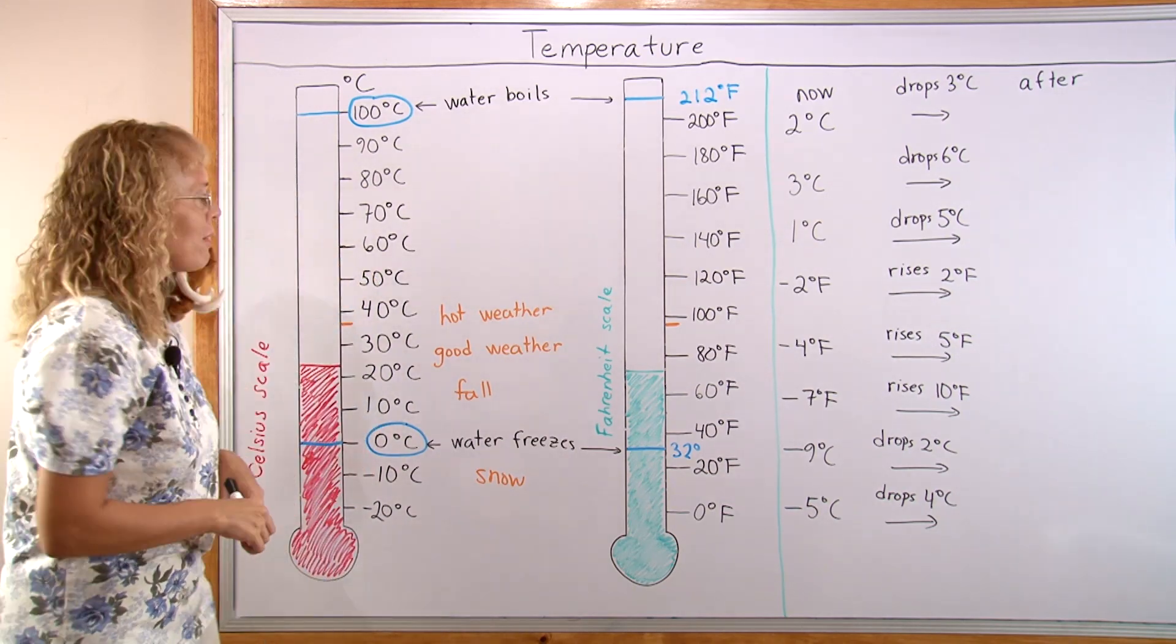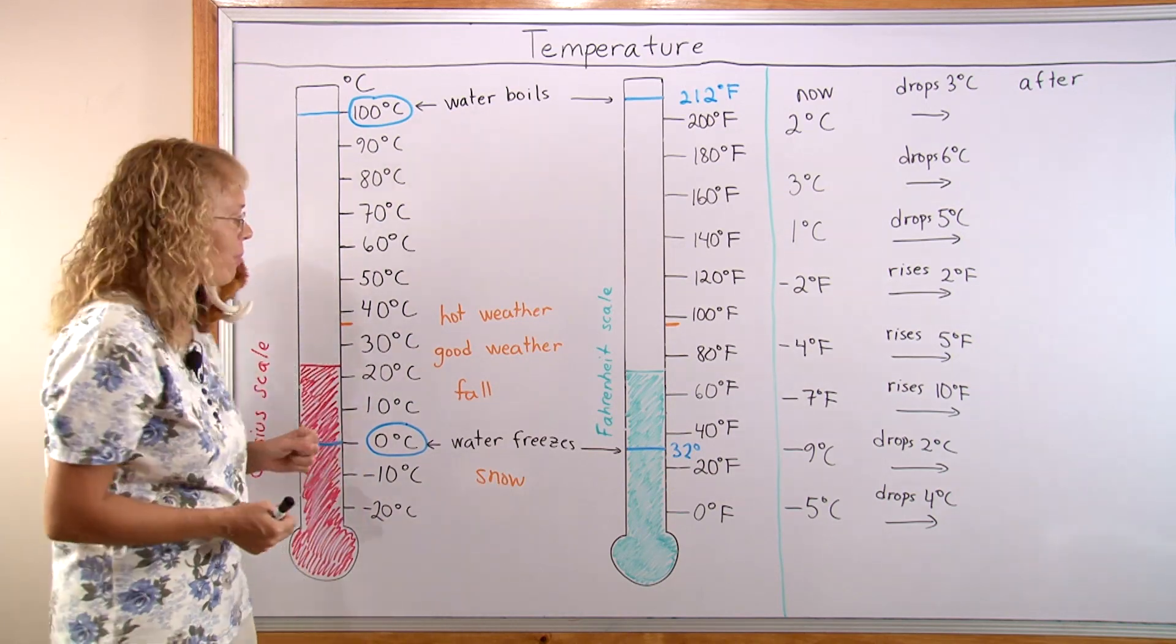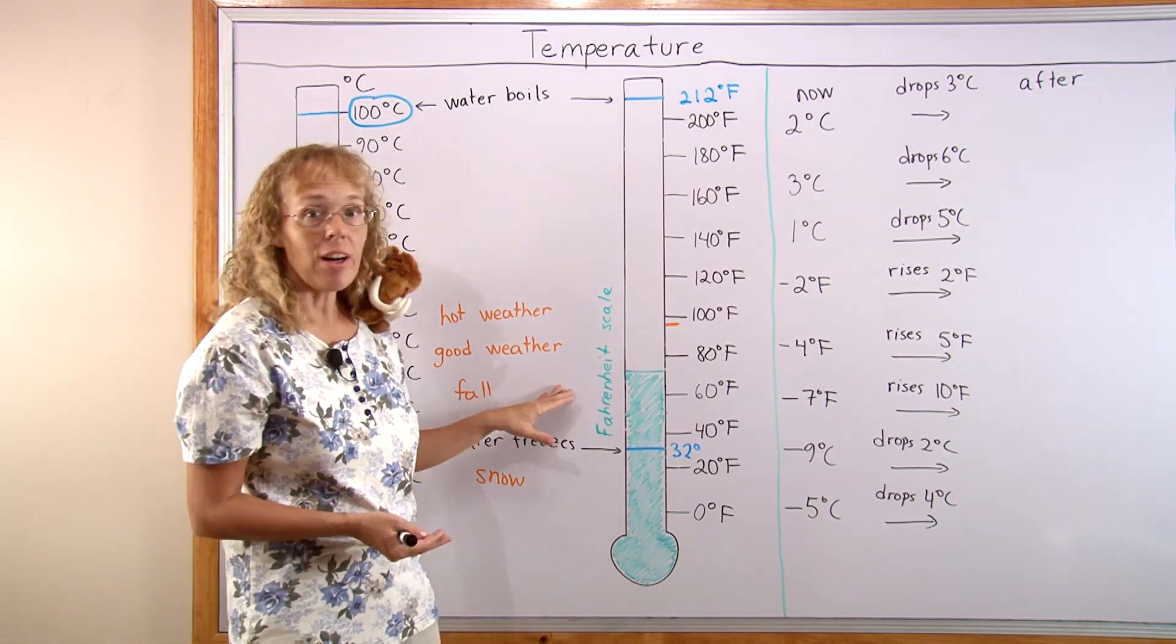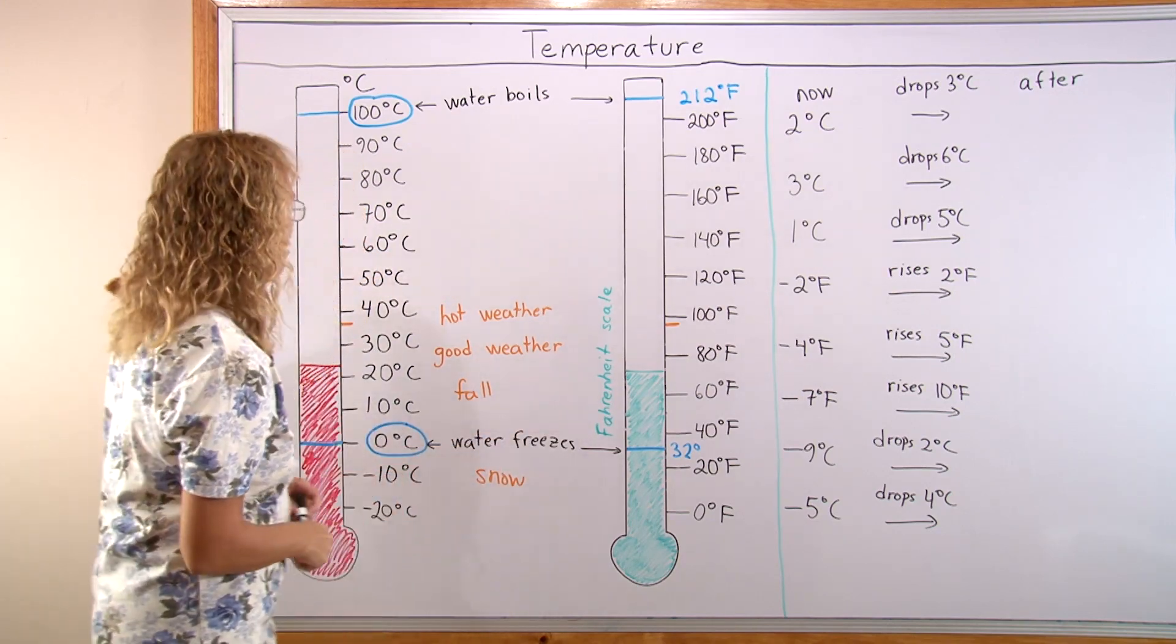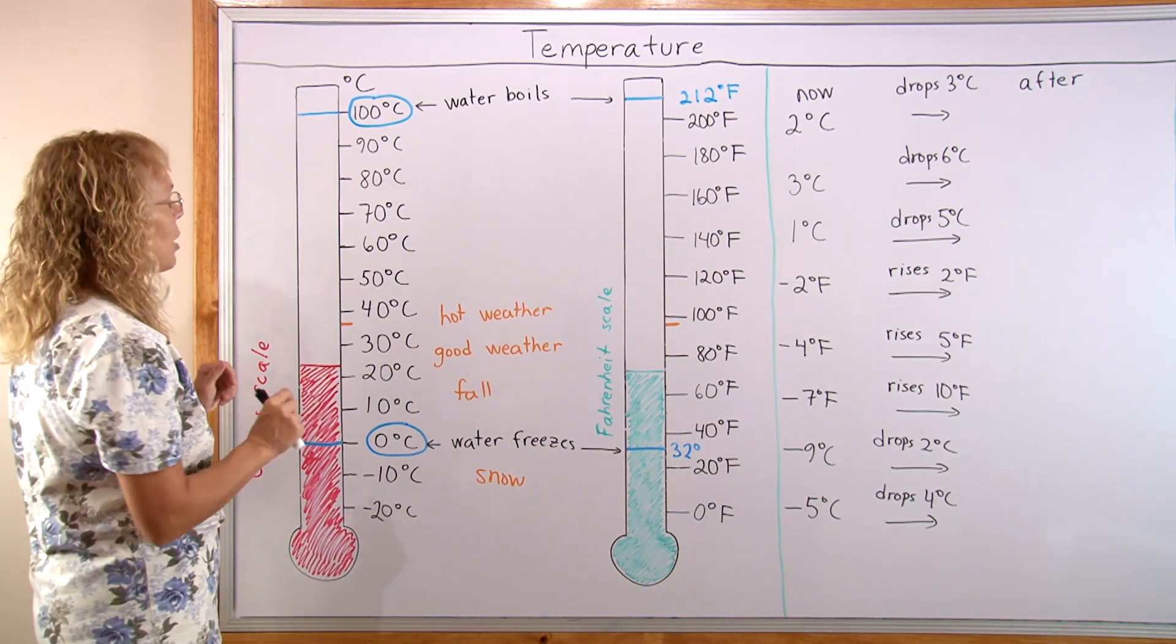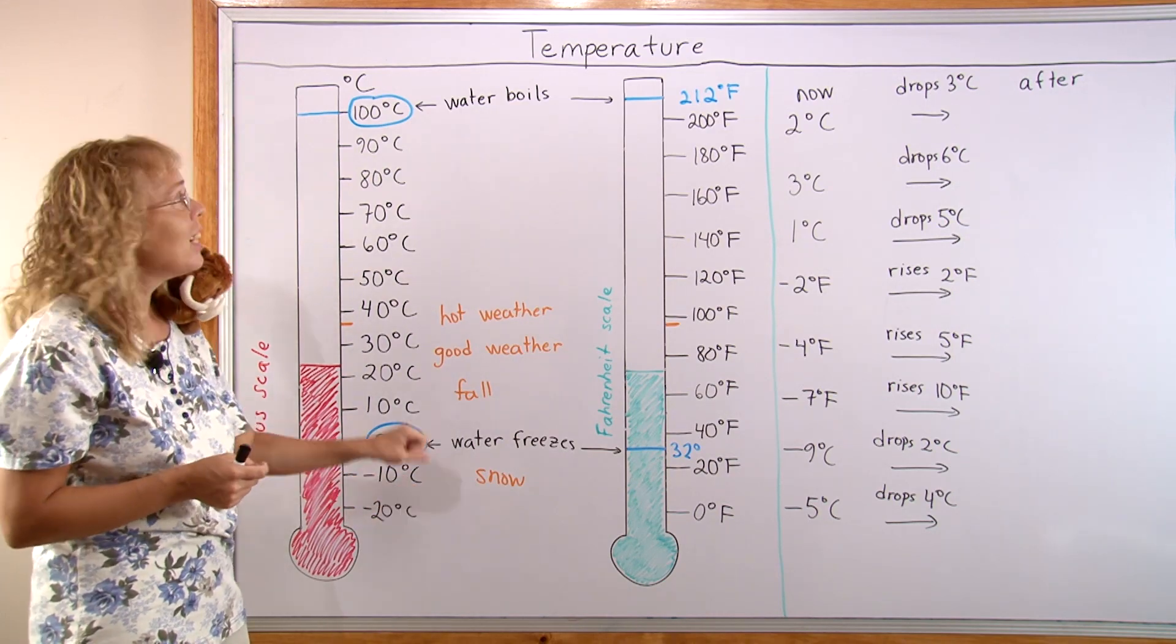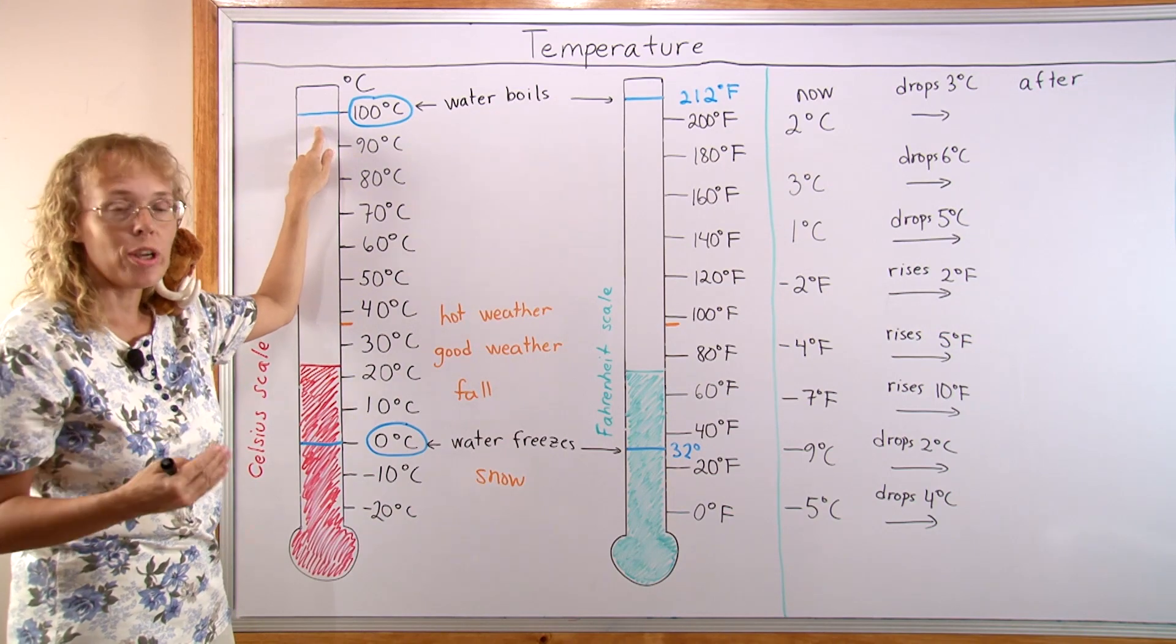Now we have two scales commonly used to measure temperature. The first one is the Celsius scale, which is used in almost all the world. The second one is the Fahrenheit scale, which is used in the United States. For the Celsius scale, there are two points that define it: 0 degrees Celsius, which is when water freezes, and 100 degrees Celsius, which is when water boils.